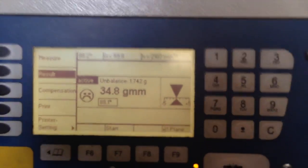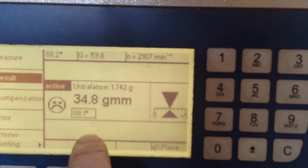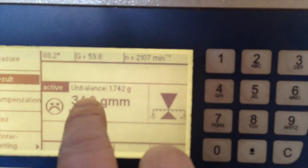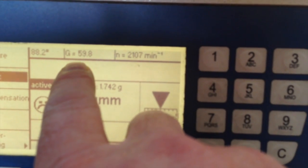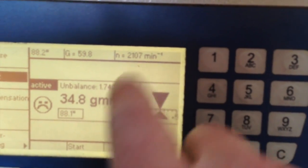And as you can see from the machine here, this tool has 34.8 grams of unbalance. It means it's a G 59.8 at 2,107 RPM.